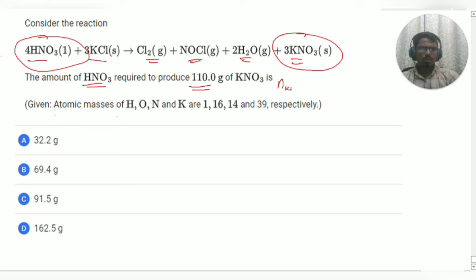So, number of mole of KNO3 is equals to 110 gram divided by 101 gram, that is the molar mass of KNO3 and what we are going to get 1.089 mole.